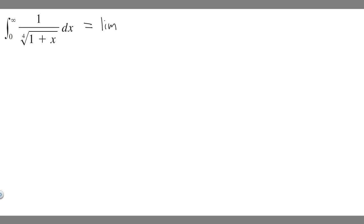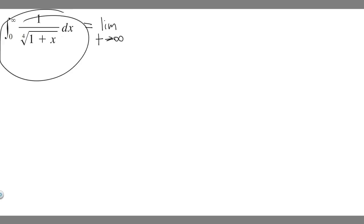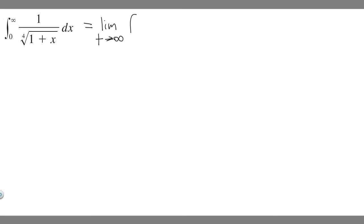What we're going to do is say the limit, and then choose an arbitrary variable — I'm just going to choose t. It's going to be t as t approaches infinity, because we look at the bounds and notice we have an infinity there. Then we rewrite the definite integral and replace the infinity with t, so it goes from 0 to t.